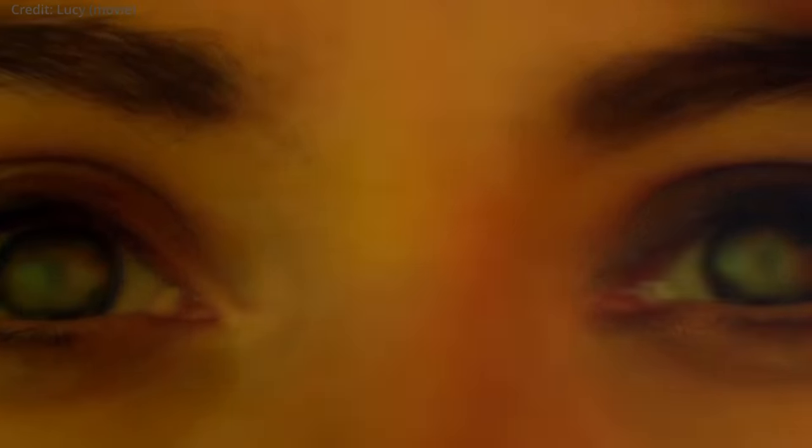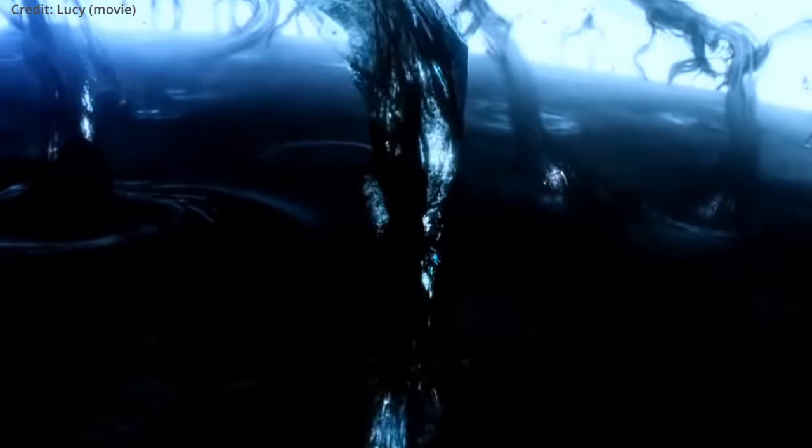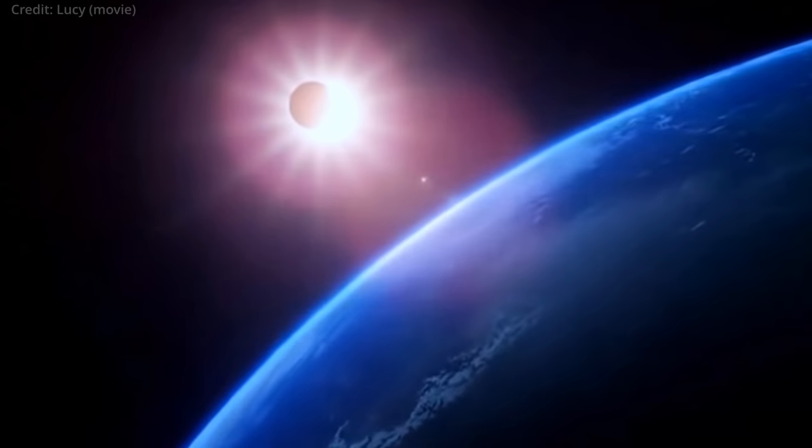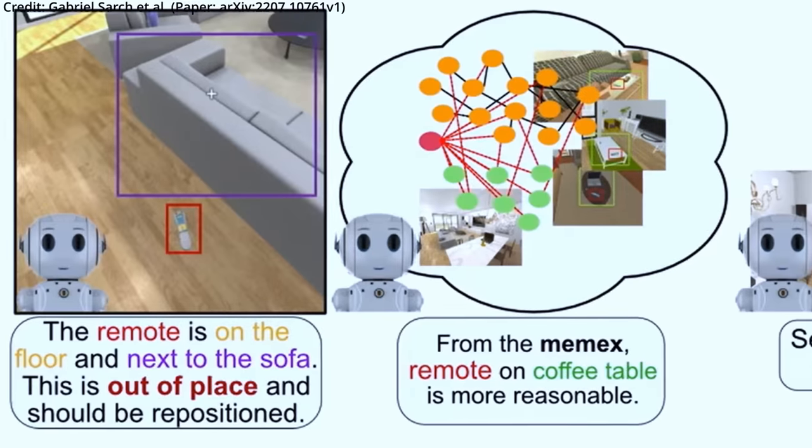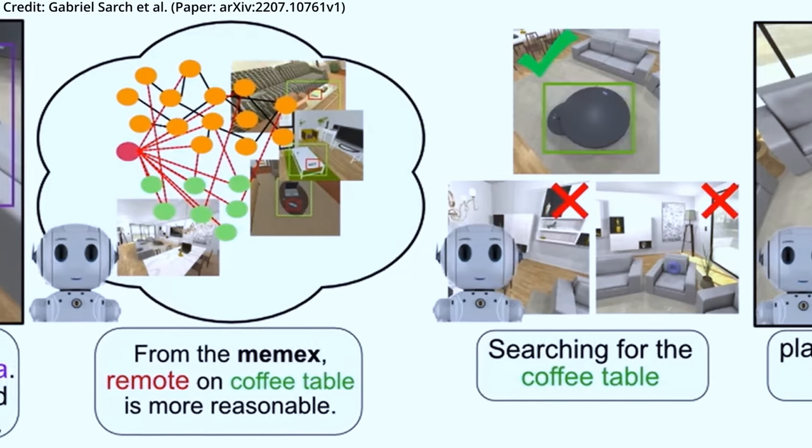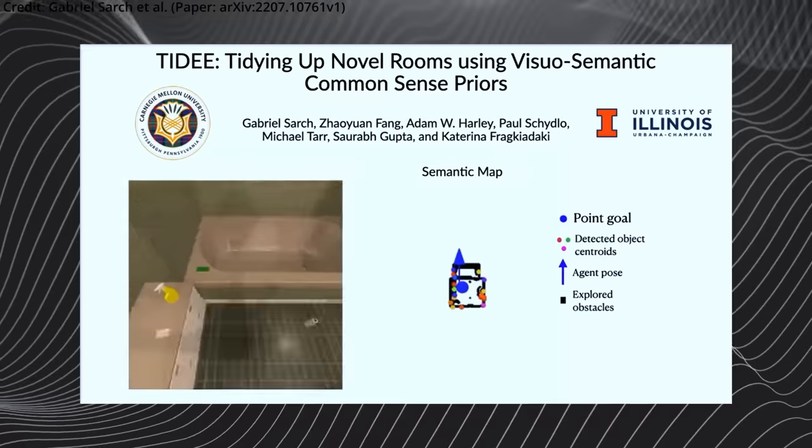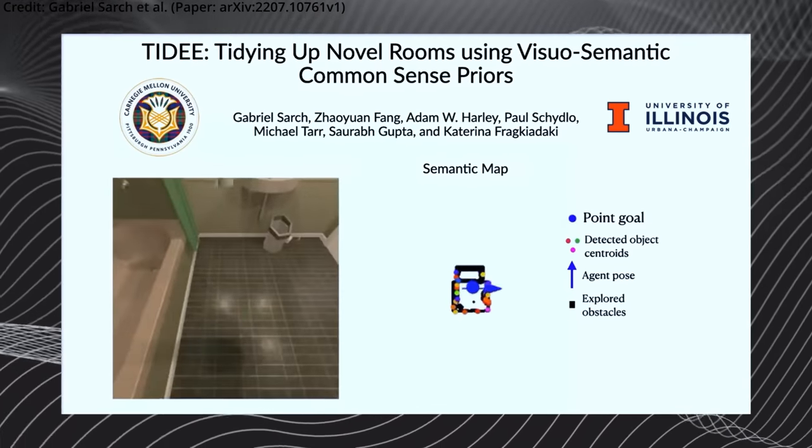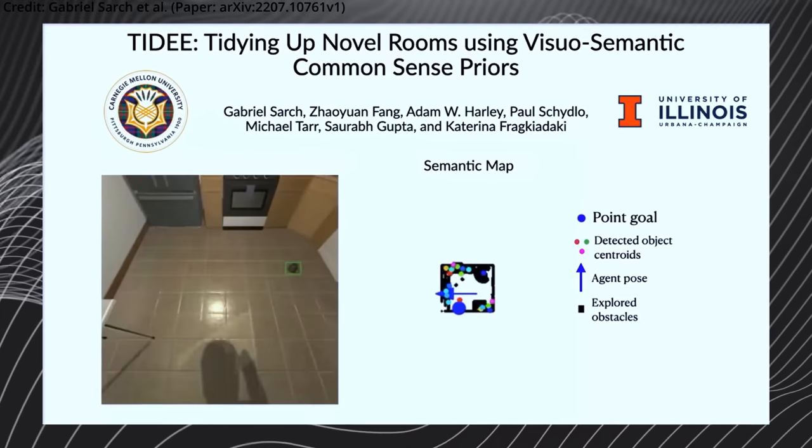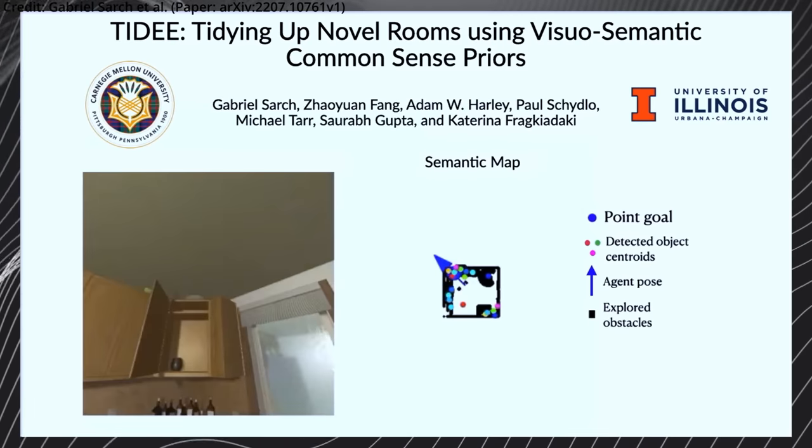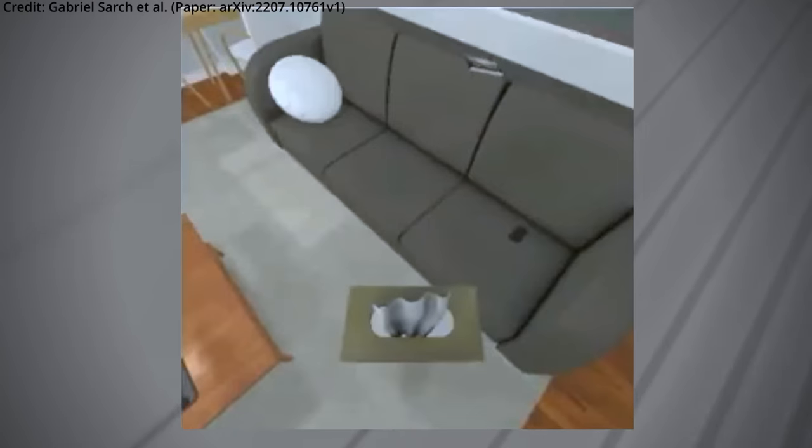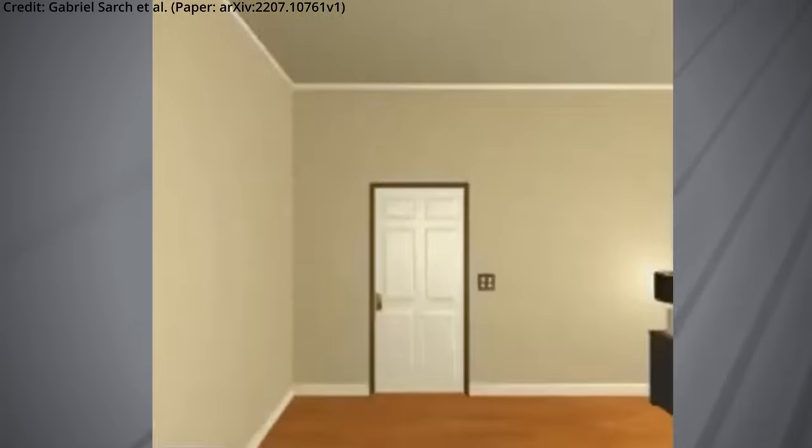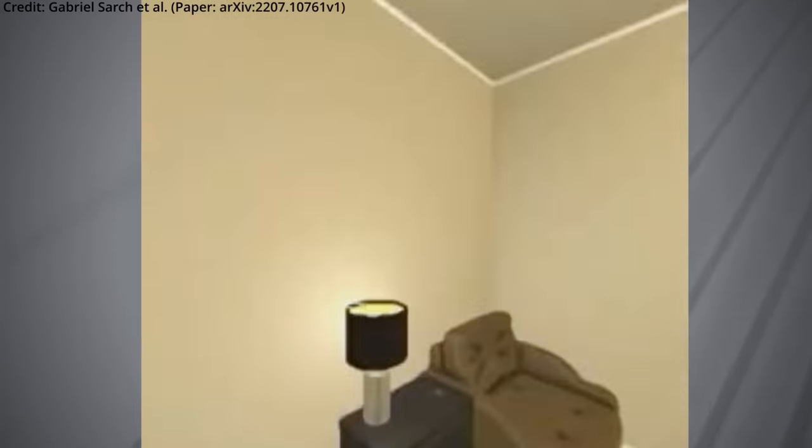In addition to Ask Anything and its video chat understanding, another groundbreaking innovation is making waves in the world of artificial intelligence. But this one is actually embodied, which means it can manipulate objects within the physical world via robot. Imagine a world where an intelligent agent can effortlessly clean up any cluttered room, even if it's never seen the space before. Researchers at Carnegie Mellon University have brought this vision one step closer to reality with their groundbreaking creation called Tidy. This embodied agent is capable of tidying up never-before-seen rooms without explicit instruction, making it a game-changer in the field of artificial intelligence.